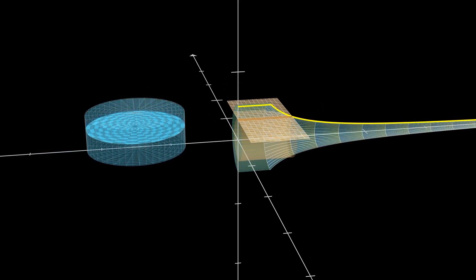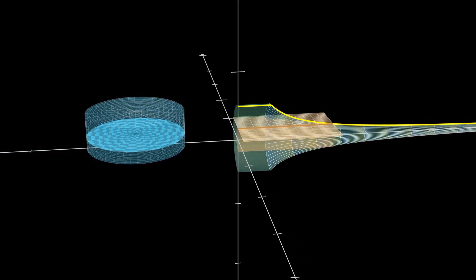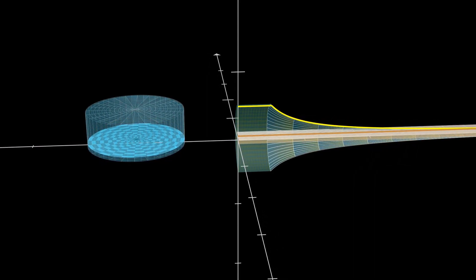Therefore, by Cavalieri's principle, the volume of the horn is equal to that of the cylinder, which is obviously 2 pi.